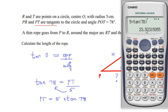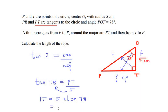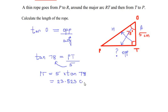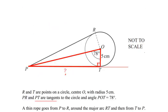Calculating 5 × tan(78°) gives us 23.523, so PT = 23.523 centimeters. Now let us find the value of PR.